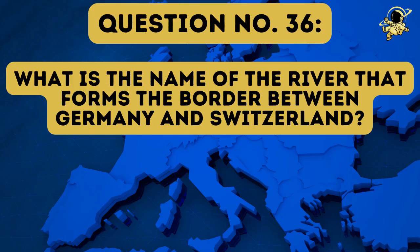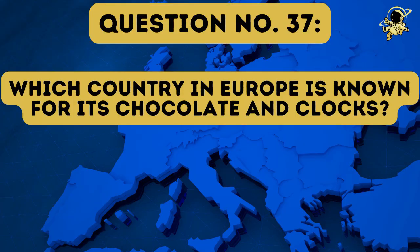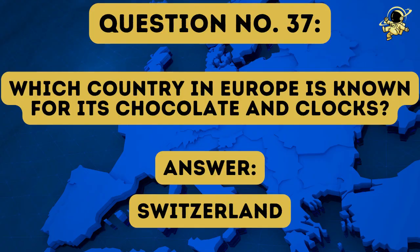Question number thirty-six: What is the name of the river that forms the border between Germany and Switzerland? And the answer to question number thirty-six is the Rhine. Question number thirty-seven: Which country in Europe is known for its chocolate and clocks? And the answer to question number thirty-seven is of course Switzerland.